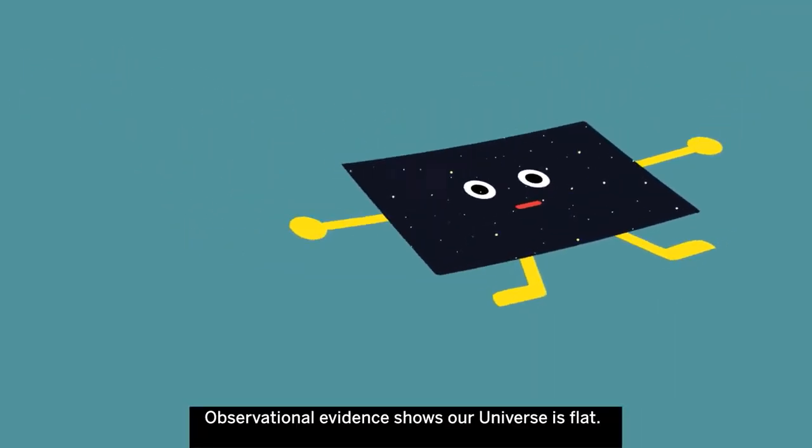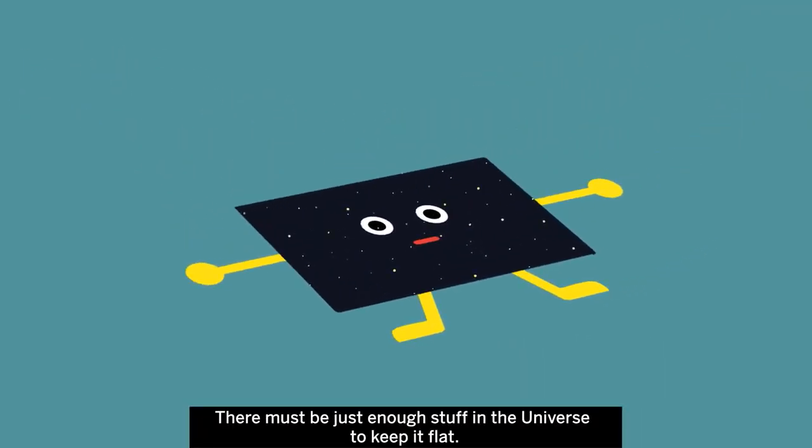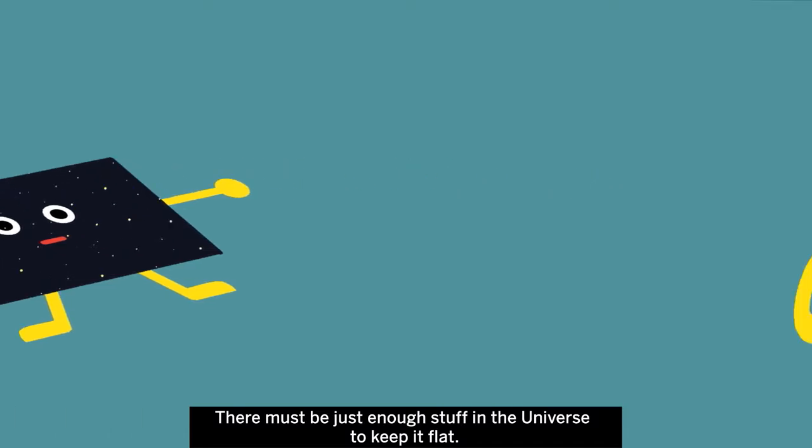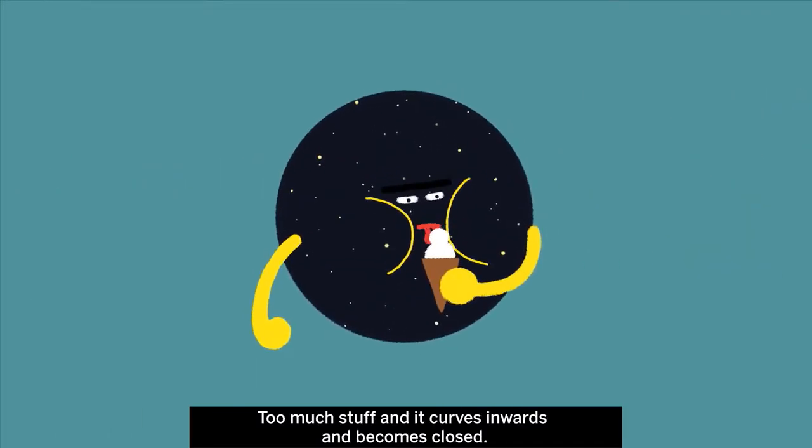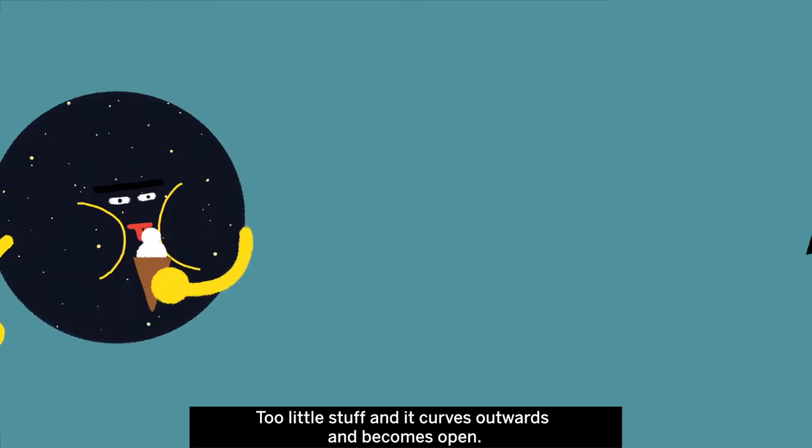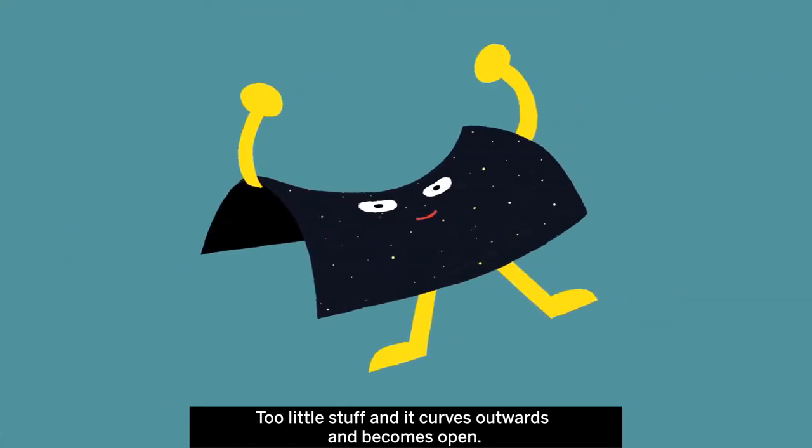Observational evidence shows our universe is flat. There must be just enough stuff in the universe to keep it flat. Too much stuff, and it curves inwards and becomes closed. Too little stuff, and it curves outwards and becomes open.